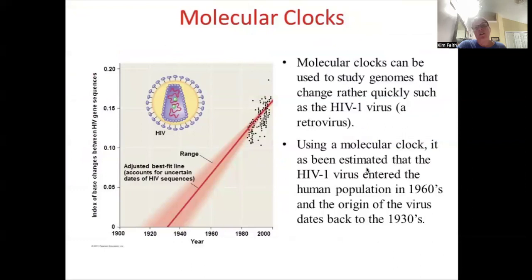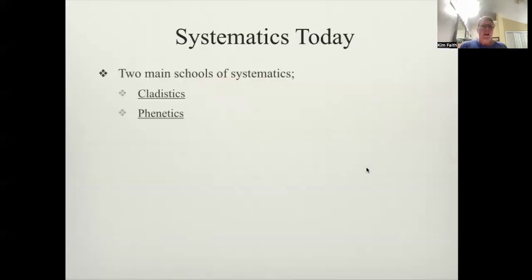Using the molecular clock, we've actually studied, we use this for viruses as well. And we looked at HIV. When you look at HIV, we can go back and say that it is estimated that it entered the human population in the 60s. And the origin of the virus actually dates back in the 30s. So we can look at that. So it is really kind of interesting, this tool.